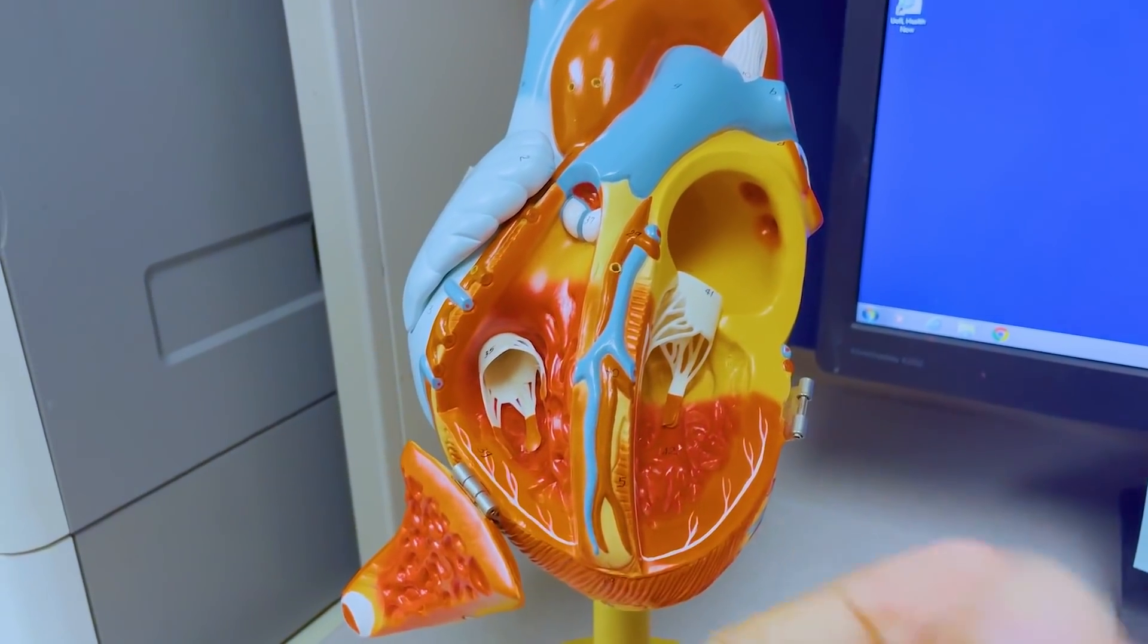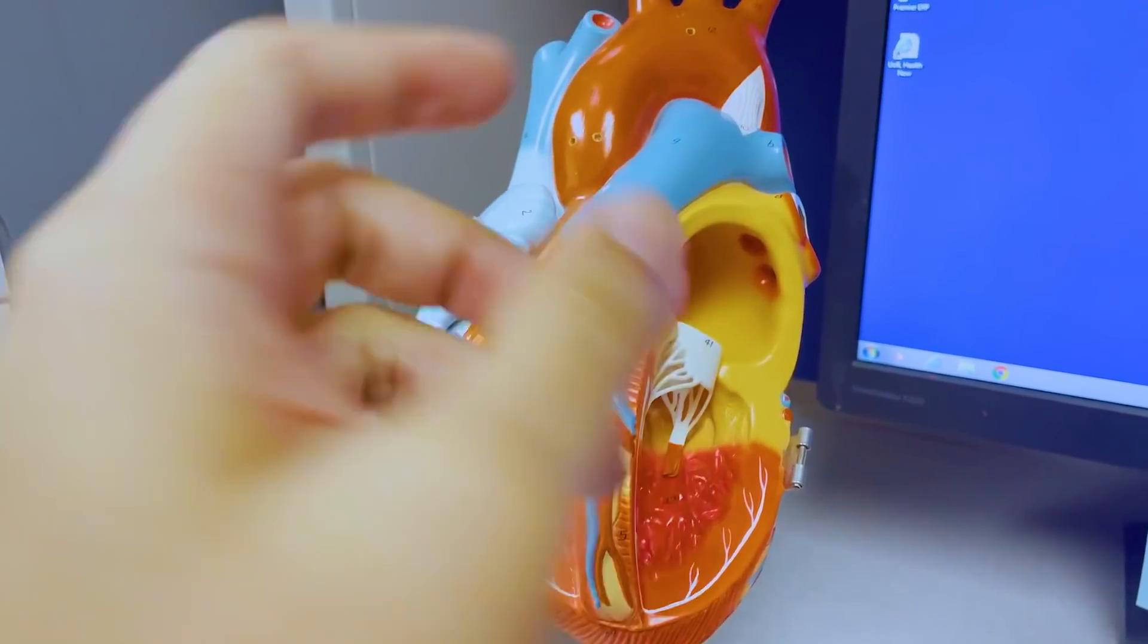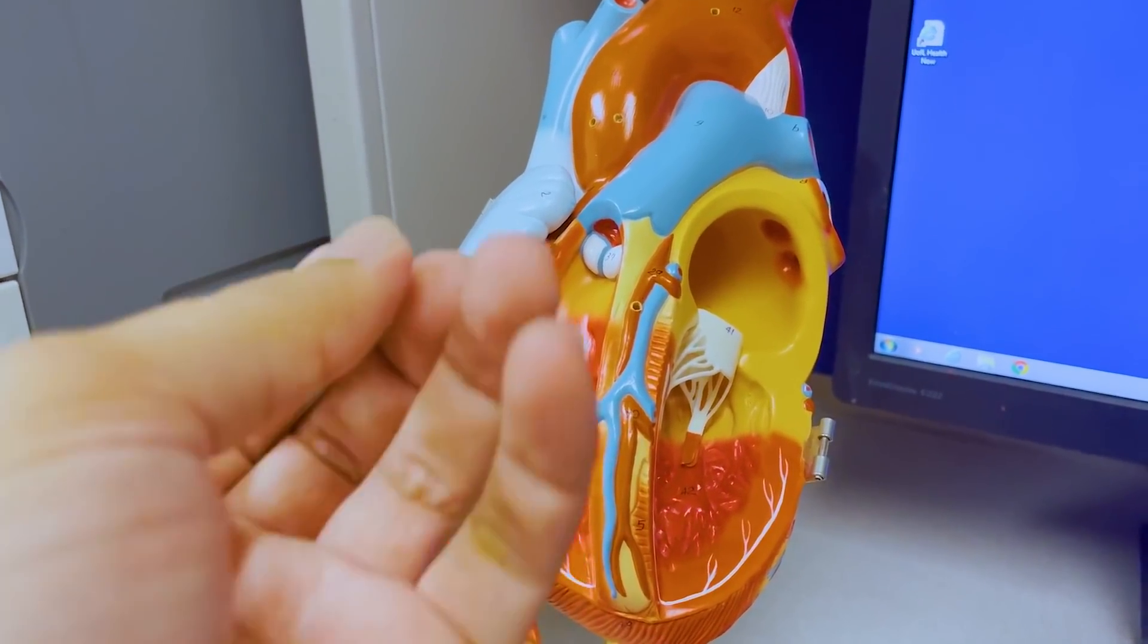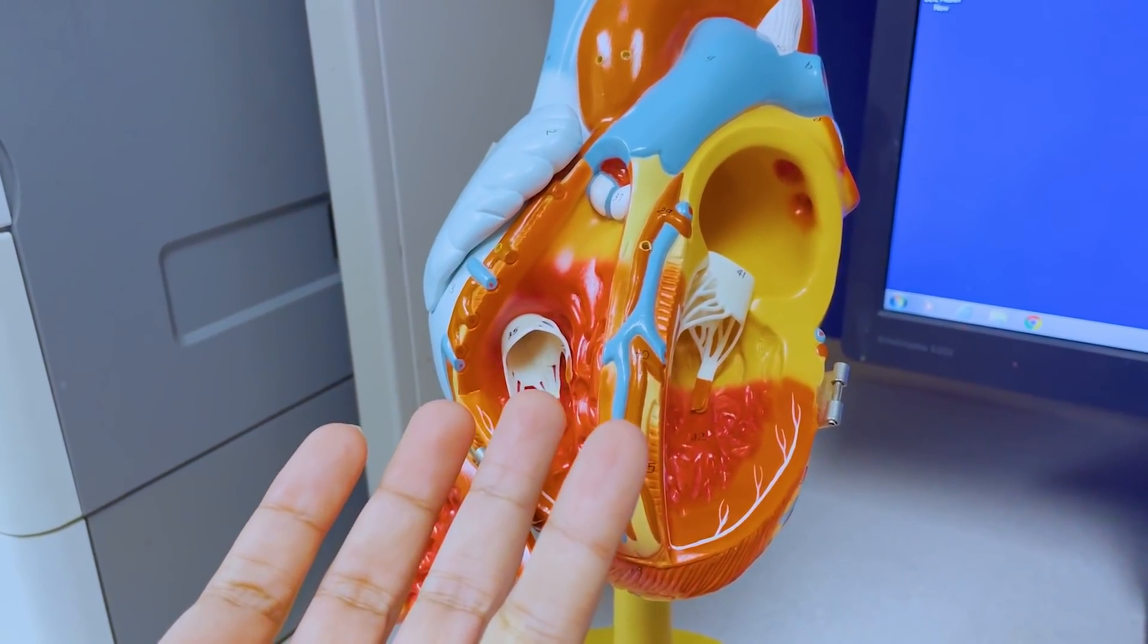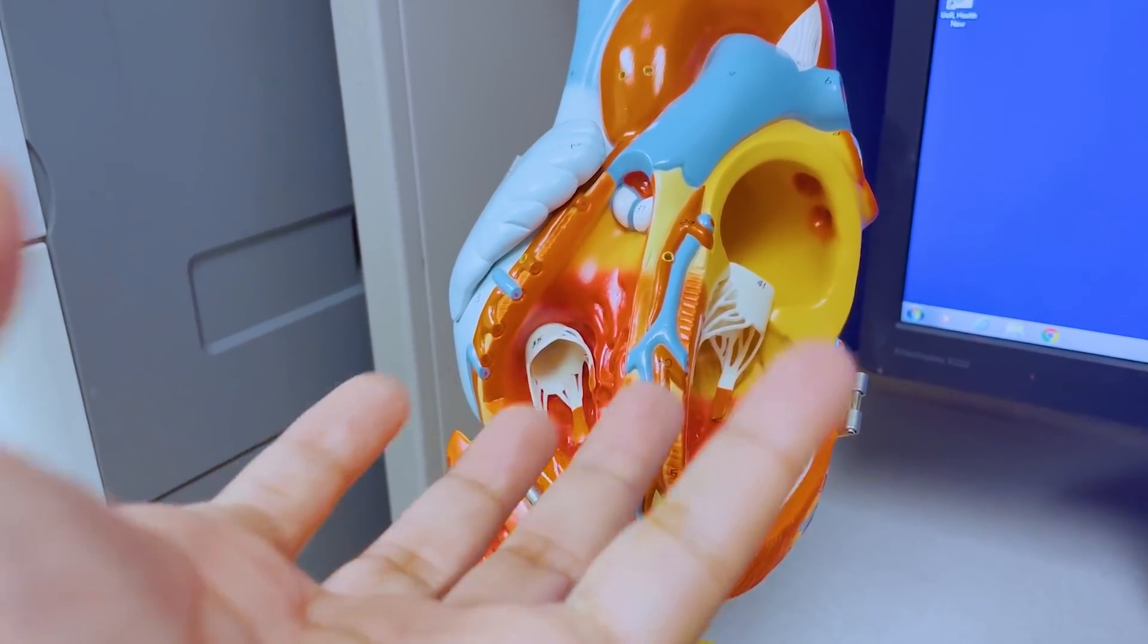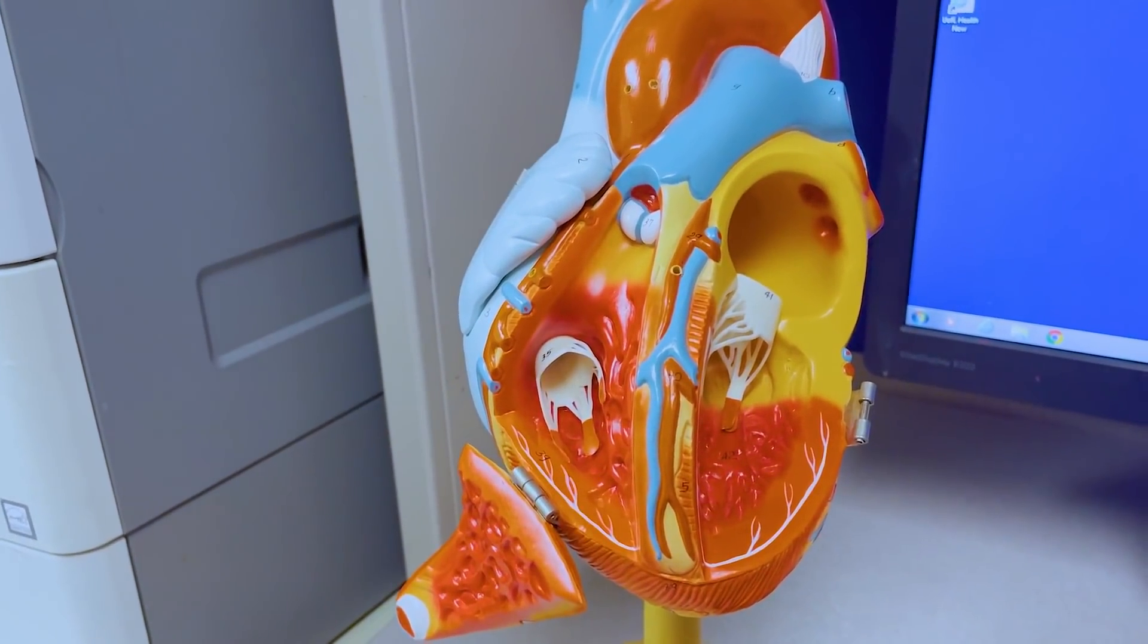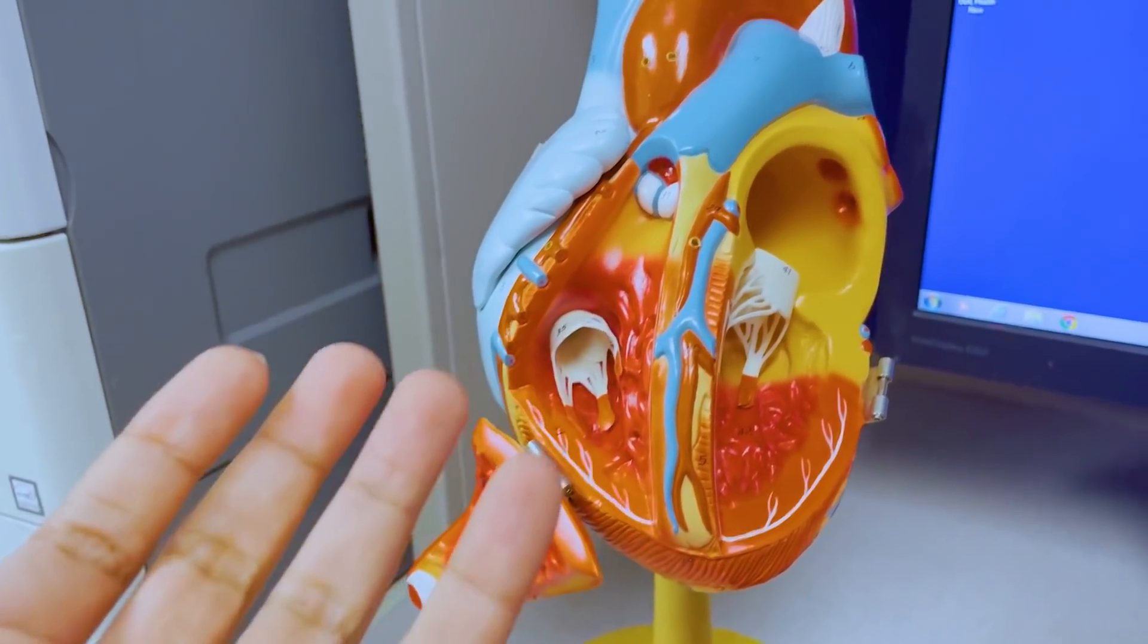And then the left ventricle is squeezing all the blood out through the aorta. So if you see, the red part is the oxygenated blood and the blue part is the deoxygenated blood. When in diastole the ventricle is relaxing, so the blood pools up in the right ventricle and the left ventricle. And when both of them squeeze together at the same time, one is throwing blood to the lungs and the other one is throwing blood into the aorta. This is how the cycle of the heart is working every time.